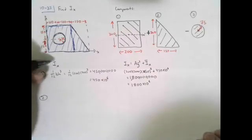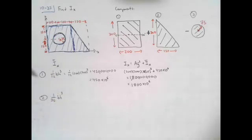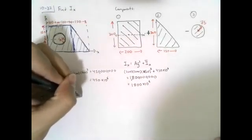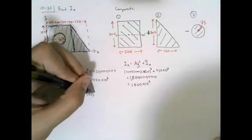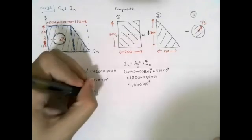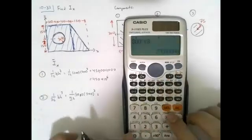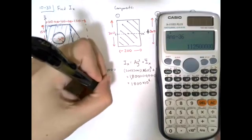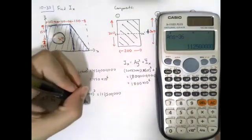For the triangular portion, the centroidal moment of inertia is 1/36 times base times height cubed. For this triangle, the base is 150 mm and the height is 300 mm. Multiplying all these for our triangle, we get a centroidal moment of inertia of 112.5 × 10⁶ mm⁴.